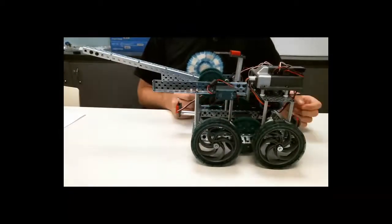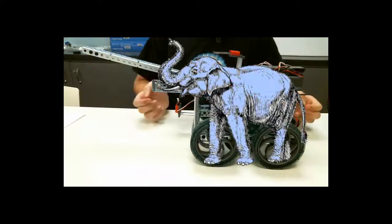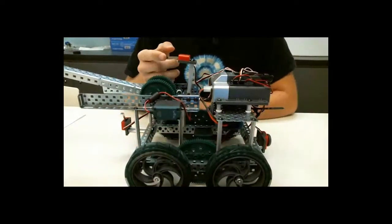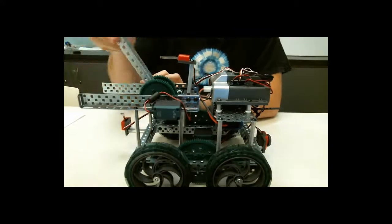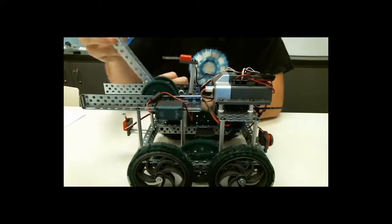Alright, to help us demonstrate some key uses of the bumper switch, we're bringing back our friend the elephant bot. Now, the bumper switch can be used, like the limit switch, to help the arm not overextend and hit important parts of the robot.